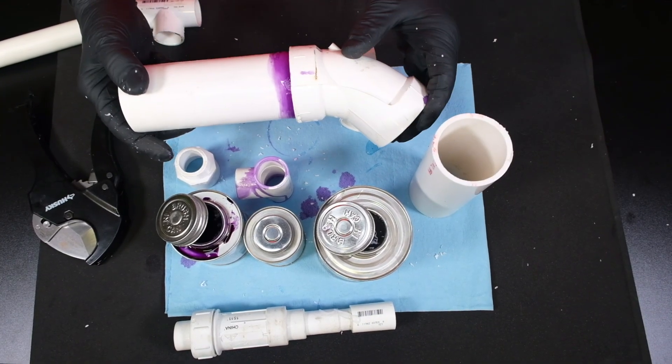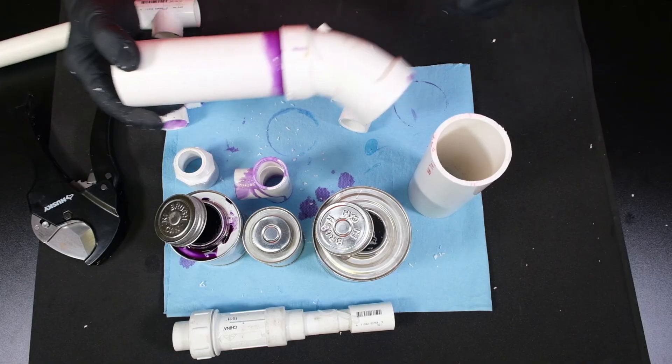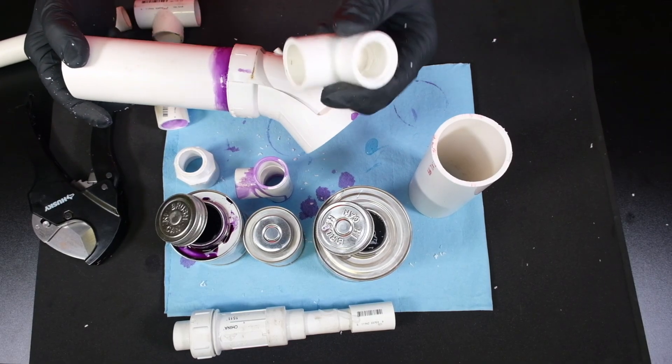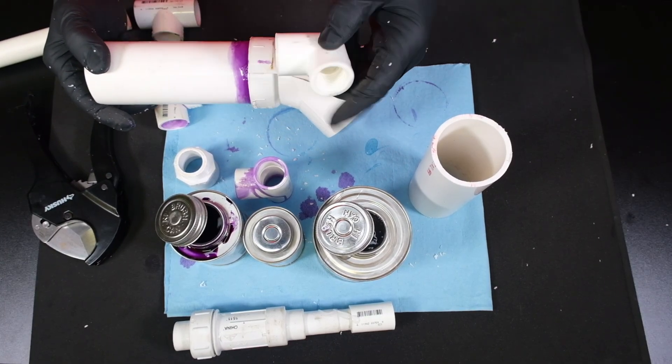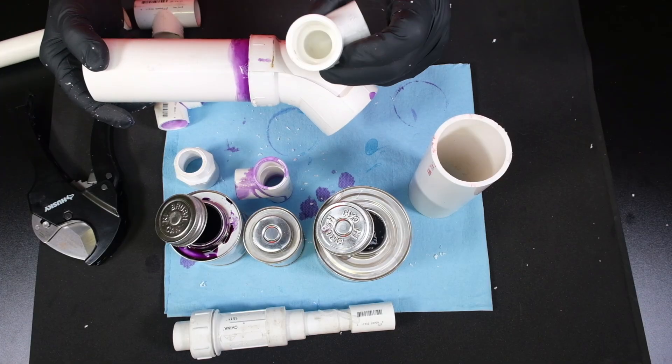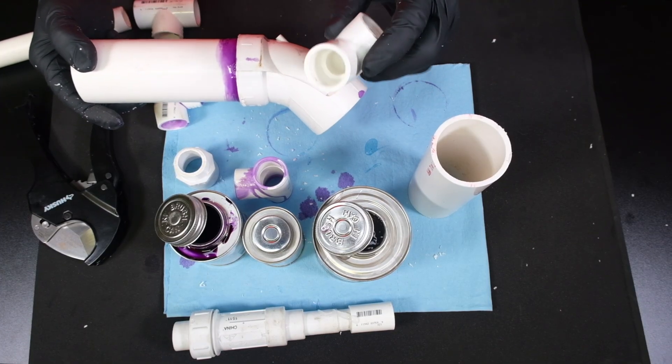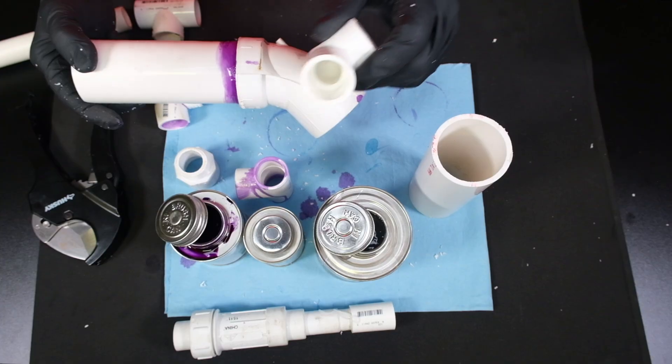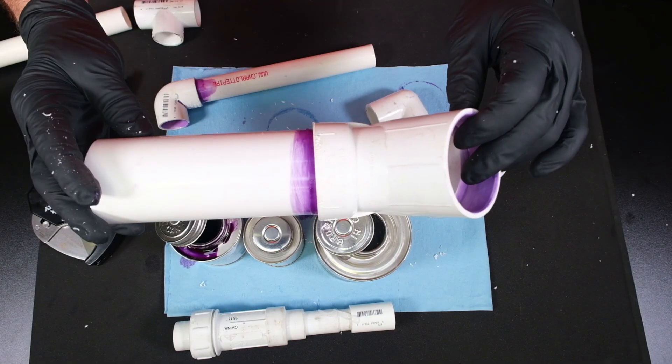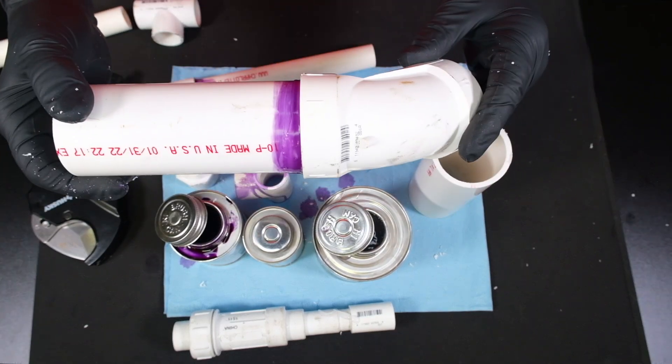Now this happens to be a DWV drainage fitting. If you notice, it's not near as deep. When you're using pressure fittings and they have sharp turns, the socket in them is going to be about twice as deep. We don't use pressure fittings on drainage lines. So that's what you do to glue PVC joints together.